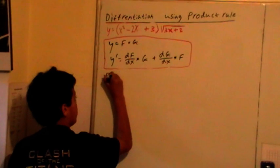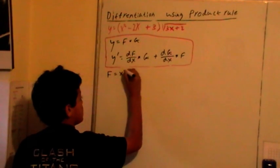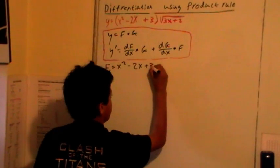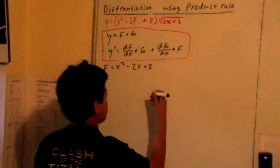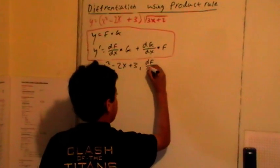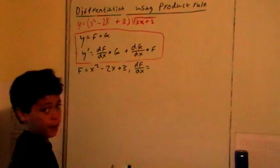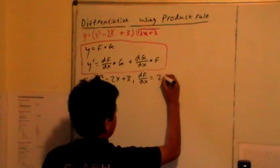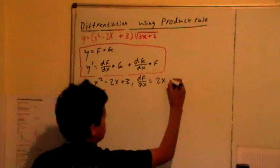So, f equals x squared subtract 2x plus 3. Now, we need to find df over dx, which is f dash, or the first derivative of f. So, 2x subtract 2.